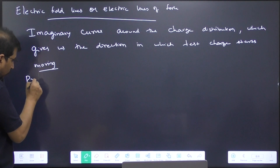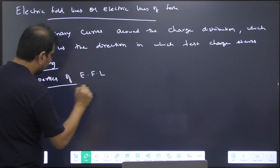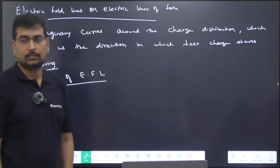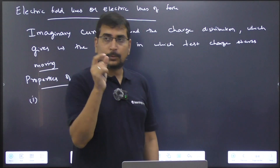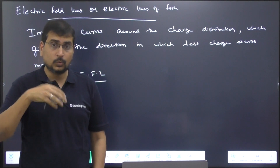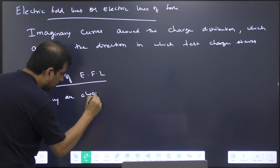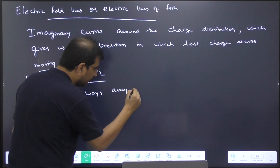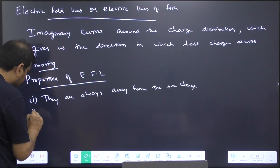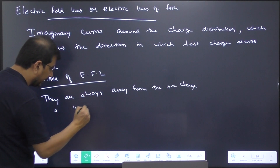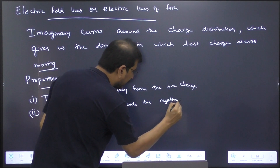When I talk about the properties of electric field lines, the first thing you observe is: for an isolated positive charge, the field lines are always away from the positive charge. Then what about the negative charge? They are always towards the negative charge.